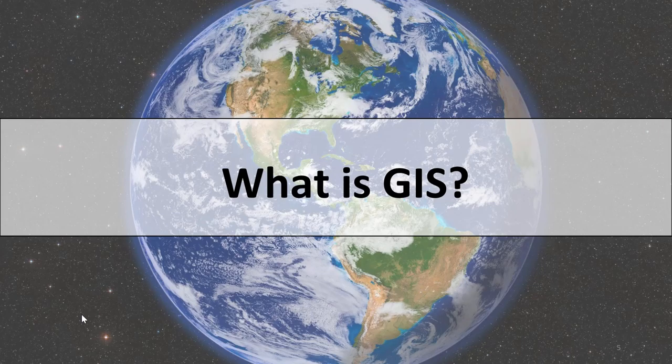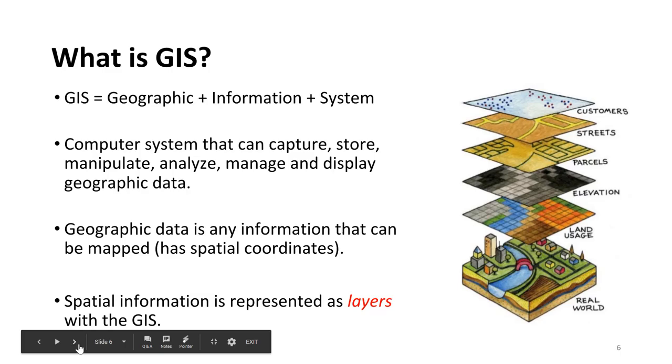So the first thing that I want to answer is what is GIS? Many people hear the term GIS and have absolutely no idea what it stands for. Well GIS stands for geographic information systems or geographic information science, and this is a computer system that can capture, store, manipulate, analyze, manage, and display geographic data. Geographic data is any information that can be mapped, anything that has spatial coordinates. For instance, your location right now can be mapped and therefore can be made into spatial data.